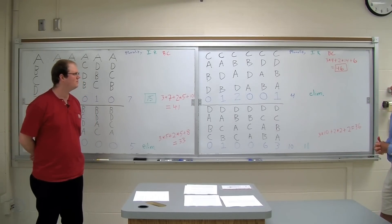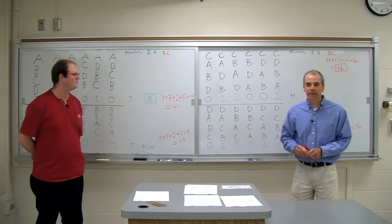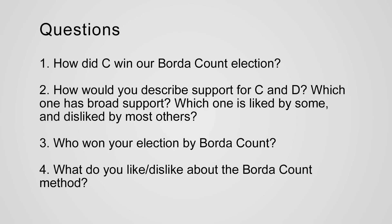I'd like you to pause the video in a moment and discuss the following questions: How is it that candidate C managed to win the Borda count election? How would you describe the support for candidate C versus the support for candidate D — which one has broad support, and which had support from some but was disliked by most others? Calculate who won your election using the Borda count. Was it a different candidate than with the other two methods? Discuss with your class what you like and don't like about the Borda count method — what are the advantages and disadvantages?